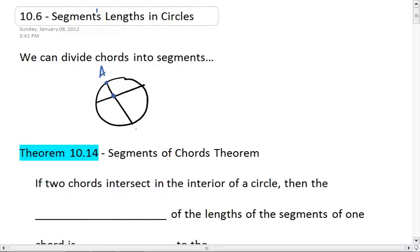So chord AB is divided into segments AC and CB, and chord DE is divided into segments DC and CE. So AB equals AC plus CB, and DE equals DC plus CE.